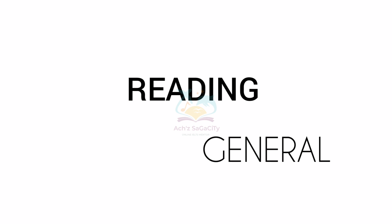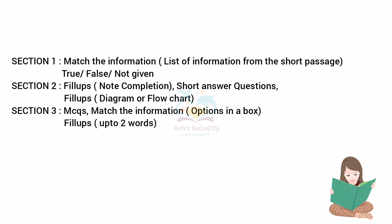Regarding the general module reading: in Section 1, you know you get two short passages. This time you can expect match-the-information type questions — they give information from the short passage and you select which paragraph or box contains that information, perhaps an advertisement or similar. Along with that, True/False/Not Given type questions. Section 1 will be easy to moderate level.